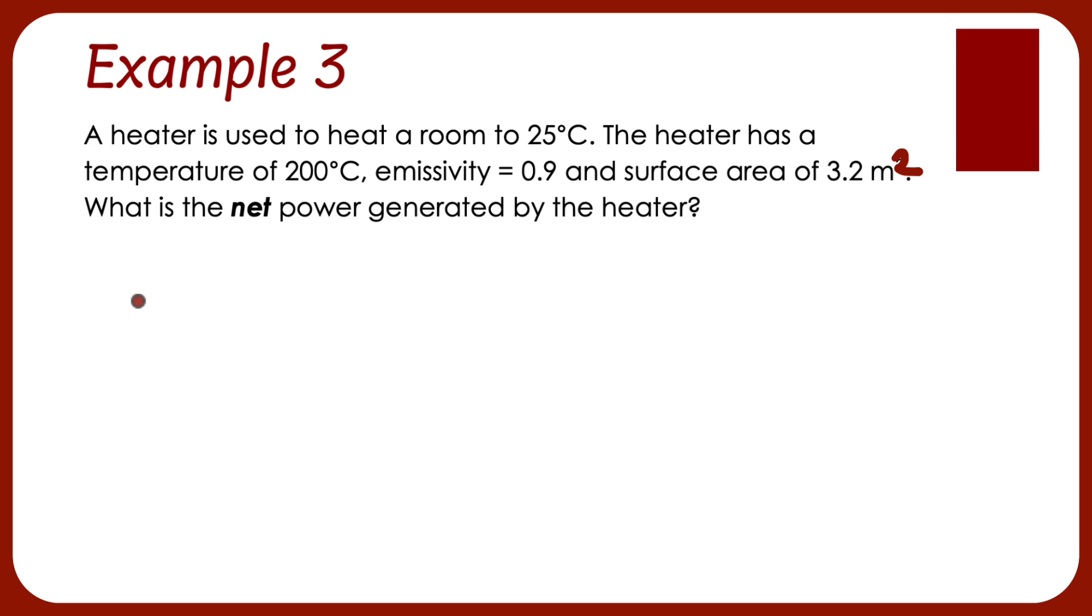One of the things I need to point out is the net power of the generator is going to be whatever power it absorbs minus whatever power it emits. In our data booklet, we have this equation. This is luminosity. That's another word for power. Notice that it's just saying the power is the Stefan-Boltzmann constant times the area and temperature to the power 4.